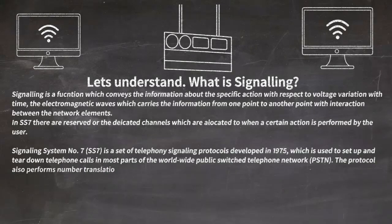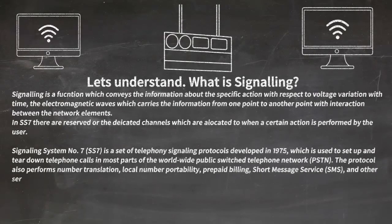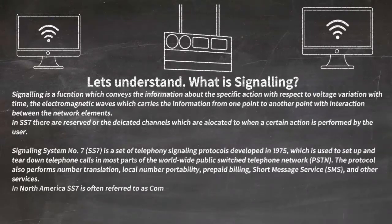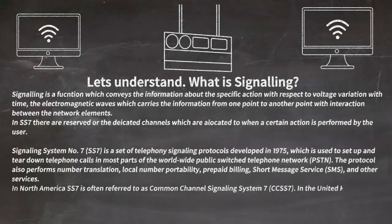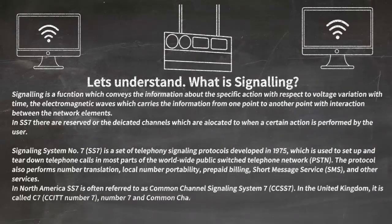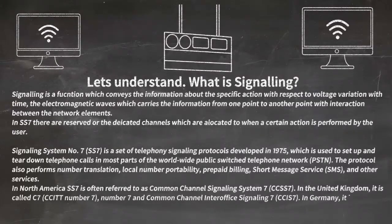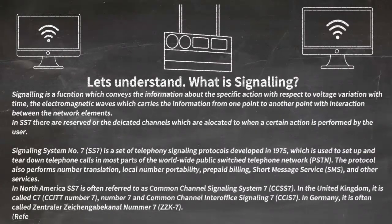The SS7 protocol also performs number translation, local number portability, prepaid billing, short messaging services (SMS), and other services. In North America SS7 is often referred to as Common Channel Signaling System CS7. In the UK it is called C7 and Common Channel Interoffice Signaling 7. In Germany it is often called Zentral Zeichen Bacchanal Number. This is referenced from Wikipedia.